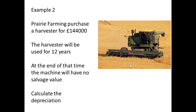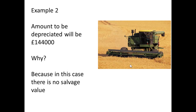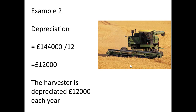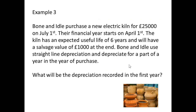Let's take a second example. Prairie Farming purchased a harvester for £144,000, which is going to be used over 12 years, and at the end they say the machine will have no salvage value. So the amount to be depreciated will be the full £144,000. The depreciation is simply 144,000 divided by 12, which is £12,000 per year.